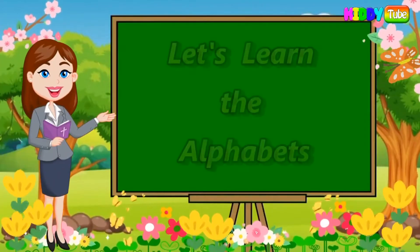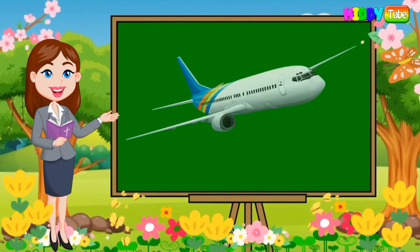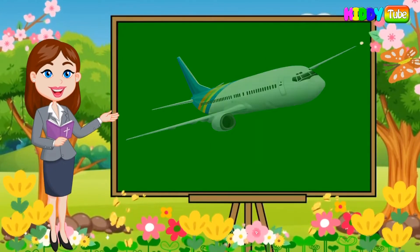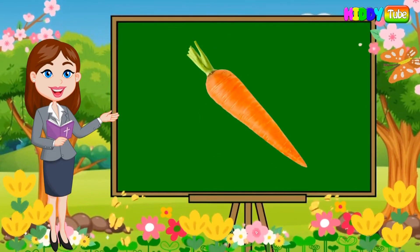Hello kids! Today we will learn the alphabets. A is for aeroplane, B is for boy, C is for carrot.